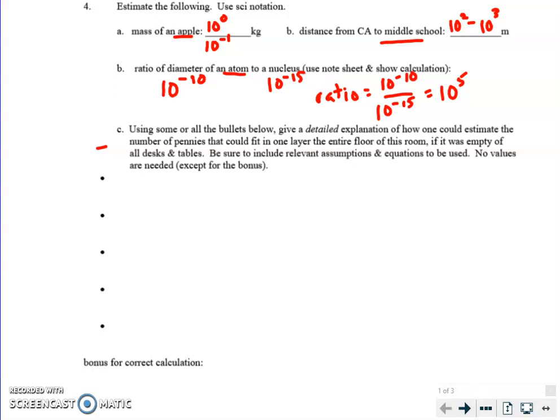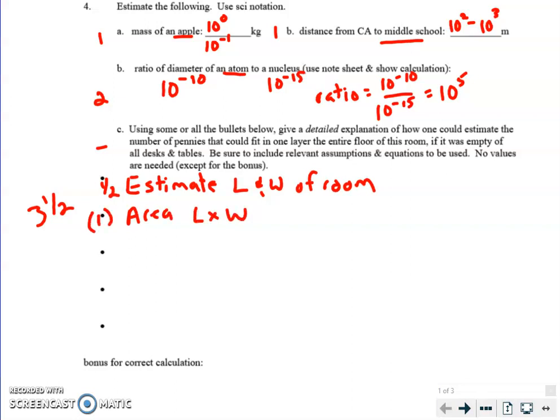How do we find a number of pennies that could fit across there? Here's what I'm looking for. This is a three and a half point problem. This one was worth two points. Each of these was worth one point. So you could say, I'm just going to go right to it. So estimate length and width of room. Some statement there, that's a half a point.